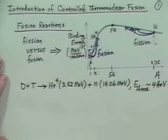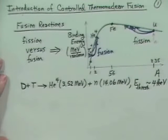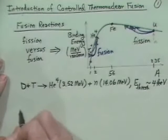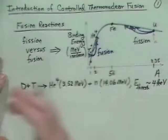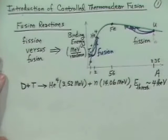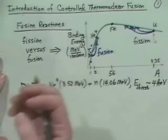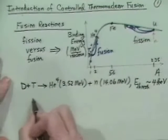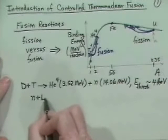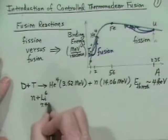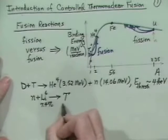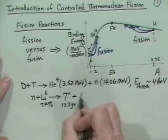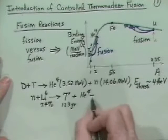Where do we get deuterium and tritium? Deuterium turns out to be a one part in 6,500 isotope in all hydrogenic species in water — H₂O. So we have a lot of that. Where do we get tritons? The problem is that tritons decay with a half-life of 12.3 years, so we have to get tritons from someplace. What you do is take the neutron from the DT reaction and collide it with a lithium-6 nucleus, which is the 7.4% abundant isotope of lithium.